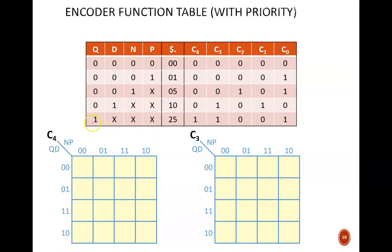The function table expresses this idea concisely. If Q is high, then we don't care what the other input signals are doing. The quarter will be counted, and the output is thus 11001. On the next row up, if quarter is low and dime is high, then the remaining signals do not matter. The dime will be counted, and the output is thus 01010.